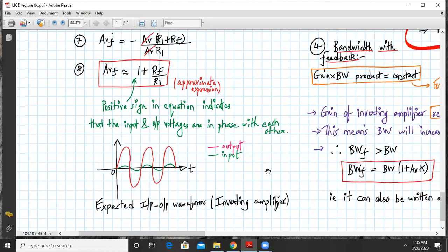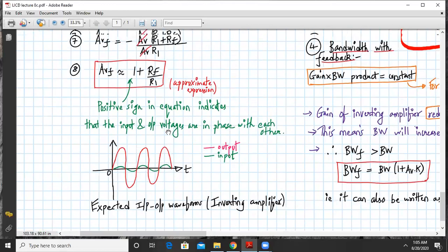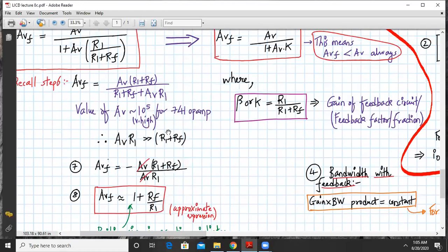These are my expected input output waveforms for a non-inverting amplifier. So by mistake again it is written inverting amplifier; this is of a non-inverting amplifier. Please take care of it.